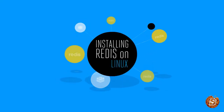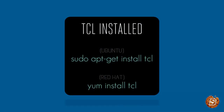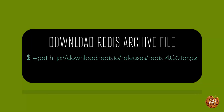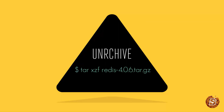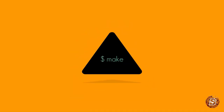Now let's look at how to install Redis on a Linux operating system. The first prerequisite is that you must have the TCL program installed. On Ubuntu, use 'sudo apt-get install tcl'; on Red Hat, use 'yum install tcl'. Once TCL is installed, download the Redis archive file — the latest stable version is 4.0.6 — using the wget command, then unarchive it, navigate into the directory using 'cd redis-4.0.6', and run the make command to build the binaries.